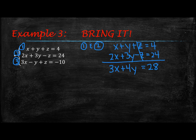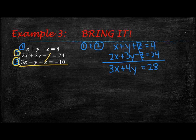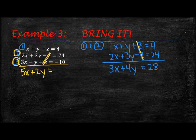You have to get two sets of equations down to only two variables. So I've done equations 1 and 2; now I'll use equations 2 and 3. Whatever canceled in this set, you want to make sure you cancel in the next set as well. Adding those up, the z terms cancel again, giving you 5x plus 2y equals 14.